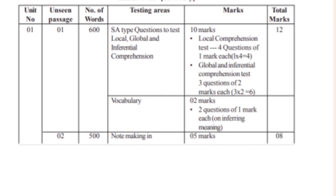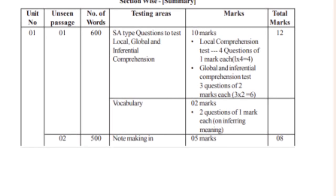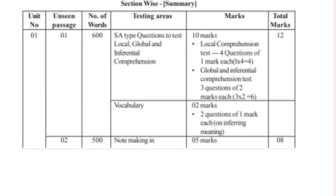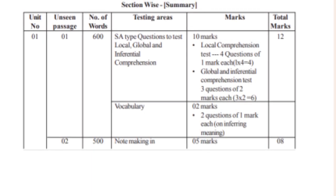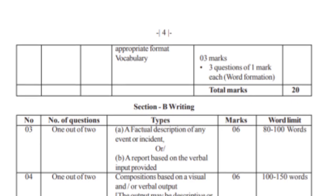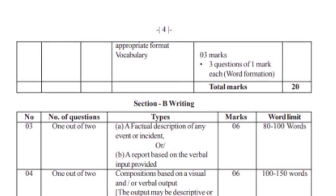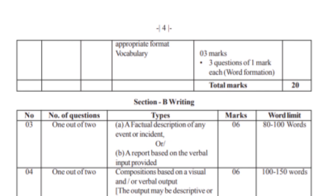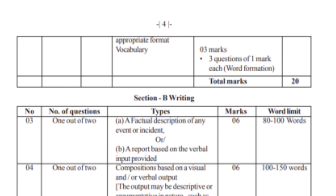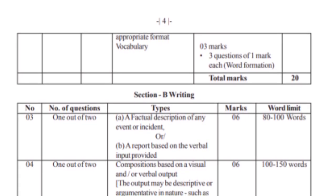There are 2 marks for note-making. If you have a piece of paper, you can write notes. These are 5 marks, total 8 marks. Note-making is 5 marks, and then 3 marks in the appropriate format. So the first passage has 12 marks and the second passage has 8 marks.